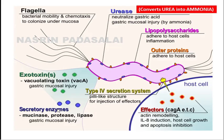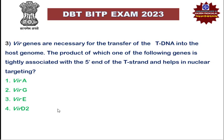The next question is: Helicobacter pylori survives in the acidic environment of the stomach because it produces an enzyme called urease. Helicobacter pylori is a spiral-shaped bacterium generally present in the mucus layer of our stomach. It secretes the enzyme urease, which converts urea into ammonia, and this ammonia neutralizes the hydrochloric acid (gastric acid) in the stomach, allowing the bacteria to survive.